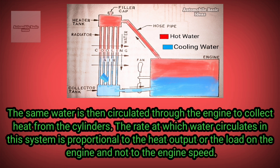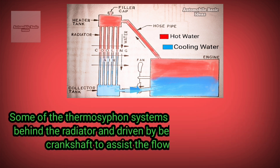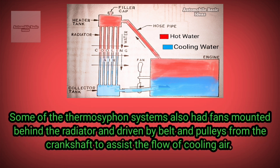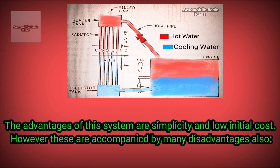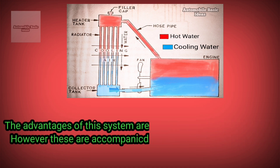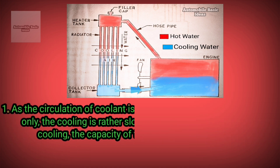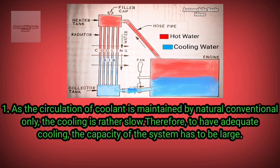The rate at which water circulates in this system is proportional to the heat output or the load on the engine, and not to the engine speed. Some thermosiphon systems also had fans mounted behind the radiator and driven by belt and pulleys from the crankshaft to assist the flow of cooling air. The advantages of this system are simplicity and low initial cost.